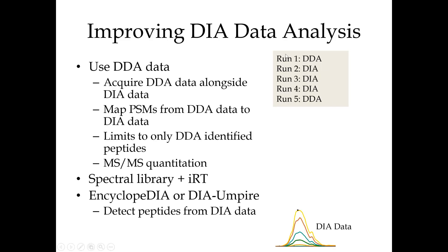Here's what we're going to do today: if you put some DDA runs in with your DIA runs — even before and after — that gives you identifications on the same chromatography. You need to normalize, since chromatography can drift. If chromatography is stable and you measure DDA on either side, you can just use the times you see in the DDA to pick the times in the DIA. We acquire DDA along with DIA, map from DDA to PSMs, put those in a library, and look for them in the DIA.